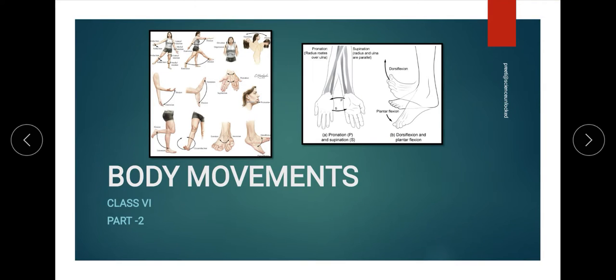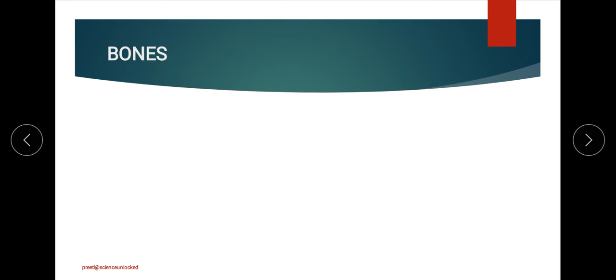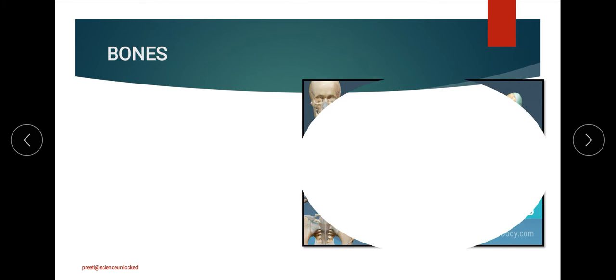Welcome back to Science Unlocked. We are continuing our session on the topic of body movements from the Class 6 science NCERT textbook. We have already discussed the introductory portion of the chapter and the different joints observed in the human body. Now we will look at the bones in our body.